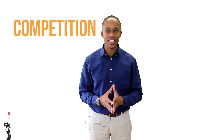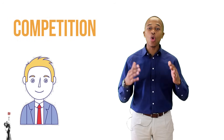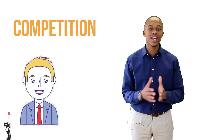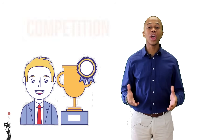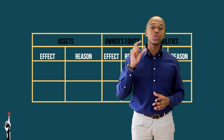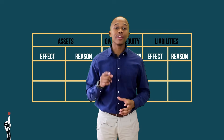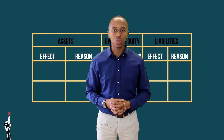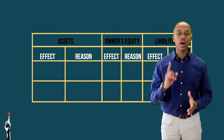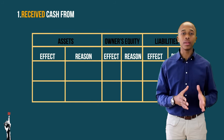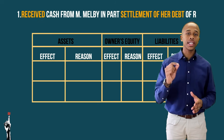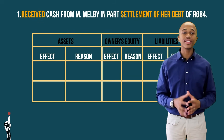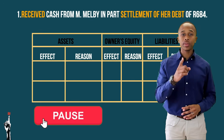For the last four transactions, let's have a little competition in class. The first person that records all these transactions wins. If you are in class, ask your teacher for four blank accounting equation templates — you can find them in the description below. Transaction one: received cash from M. Malby as part settlement for a debt of R684. Remember the pause button.